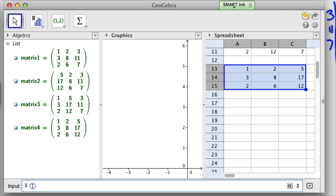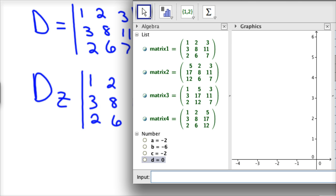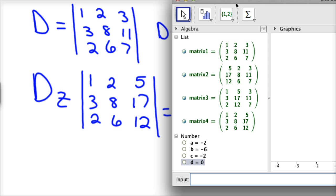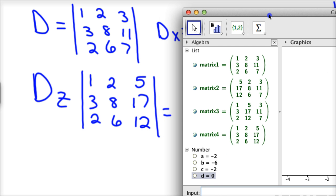And there are my four matrices. So in the input value we'll go ahead and do determinant matrix 1, enter. Determinant matrix 2, much faster than doing those 3 by 3s. Determinant matrix 3, and the last one determinant matrix 4. And it is zero. So with that information, -2, -6, -2, and 0.